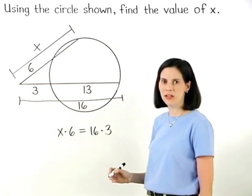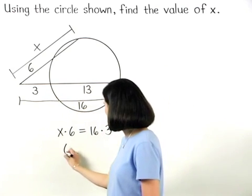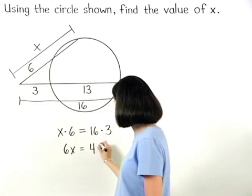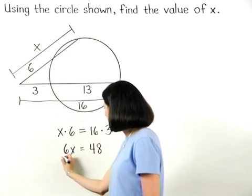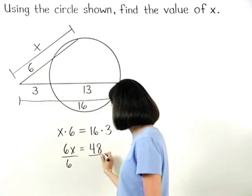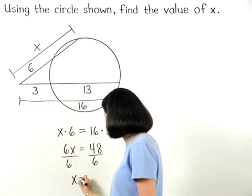Solving from here, we have 6x equals 48, and dividing both sides by 6, we find that x equals 8.